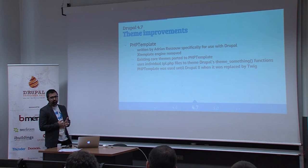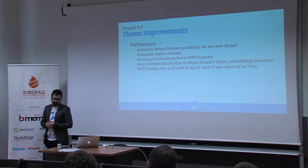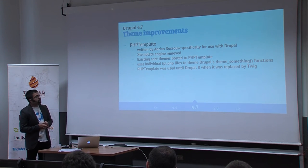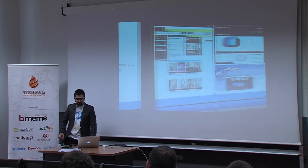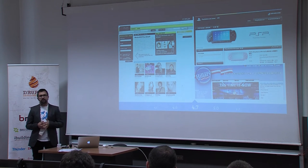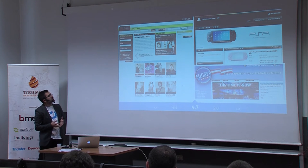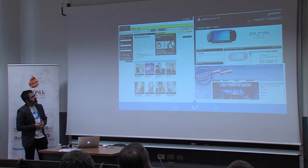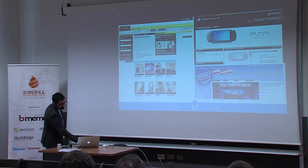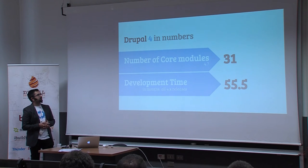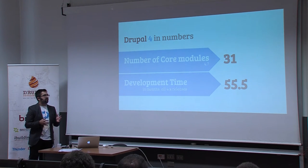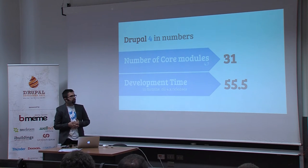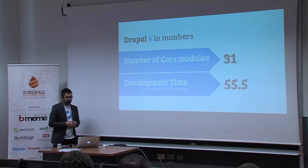Theming got big improvements in 4.7. Adrian Rousseau wrote PHP template specifically for use with Drupal, and all the xtemplate engine was removed — all core themes were ported to use PHP template. It worked by using .tpl.php files to override the Drupal theme_something functions. With little knowledge of PHP you could build very advanced layouts, which was an excellent choice. PHP template was used until Drupal 8 when it would be replaced by Twig. Now we see more and more popular sites beginning to use Drupal: MTV Co. UK, PlayStation Asia, Hillary Clinton. At the end of Drupal 4, there were 31 core modules and in total for all 4.x releases, it took about five years to develop.